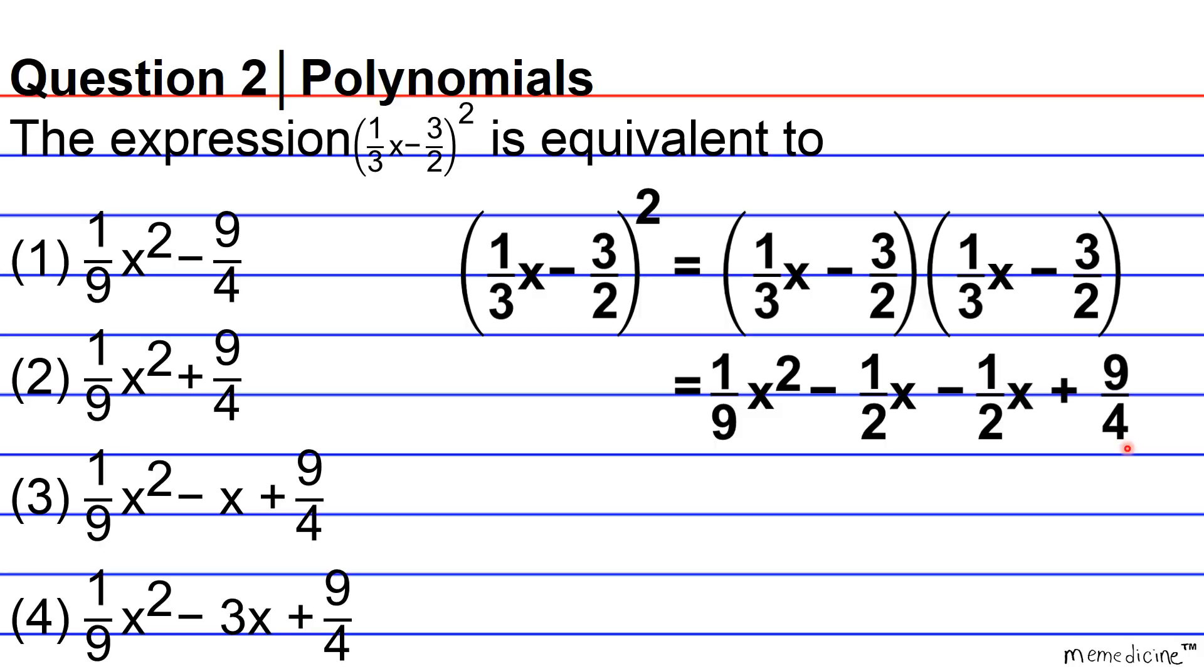Okay, so now we want to go ahead and combine like terms. If we combine a negative 1/2x plus a negative 1/2x we're just going to get negative 1 over 1x or negative 2/2x or negative x.